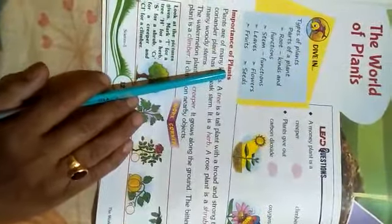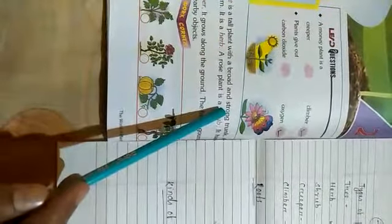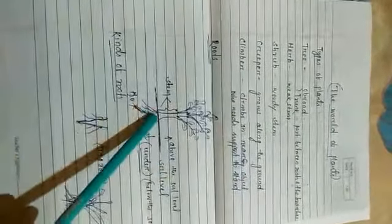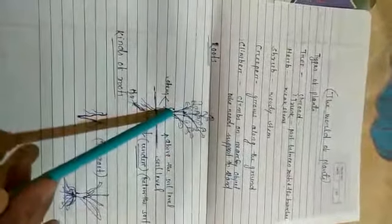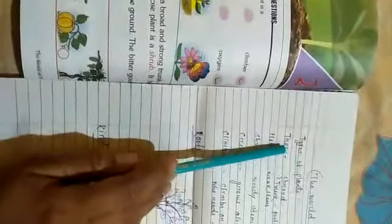Plants are of many kinds. A tree is a tall plant with a broad and strong trunk. Here it is written: a tree is a plant with a broad and strong trunk. Broad means large, and trunk is the part present between the root and the branches. The middle part between root and branches is known as stem or trunk.